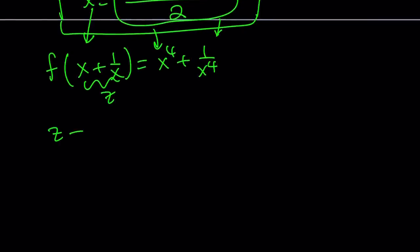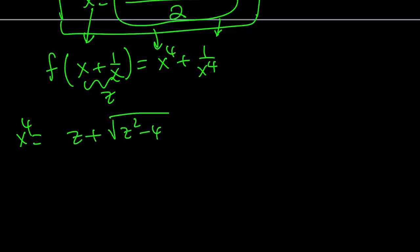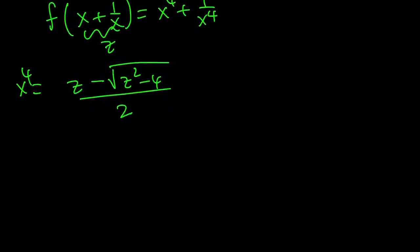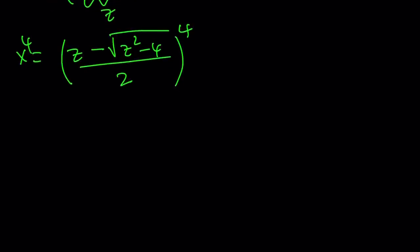I'm going to start off with x to the fourth, which is z minus the square root of z squared minus 4 over 2, raised to the fourth power. By the way, for the plus or minus sign it doesn't matter which one you use, but let's go ahead and use the minus sign this time. That is x to the fourth power. Leave it at that — do not expand it, because there are a lot of radicals.